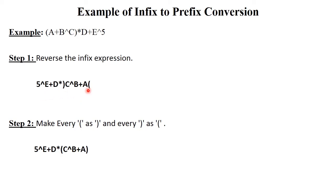The second step is to interchange the brackets — make every open round bracket a close round bracket and every close round bracket an open round bracket. For example, a closing round bracket is converted to an open round bracket, and an open round bracket is converted to a closing round bracket.